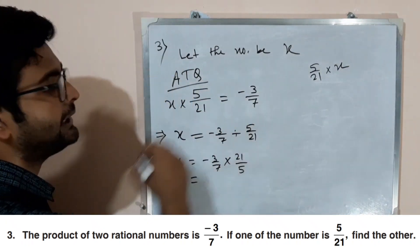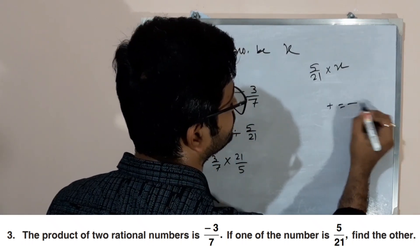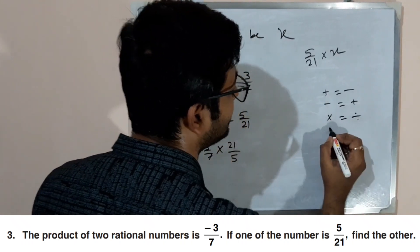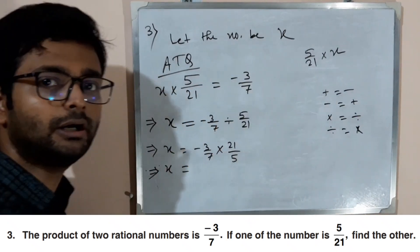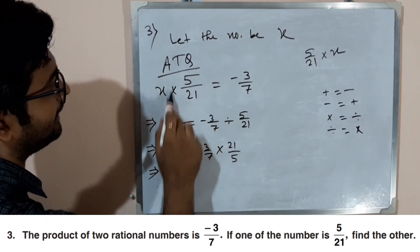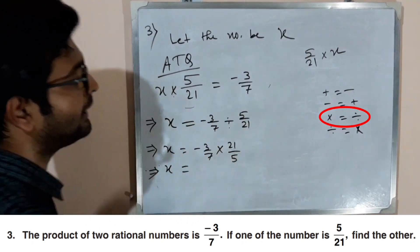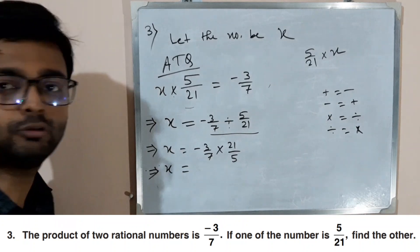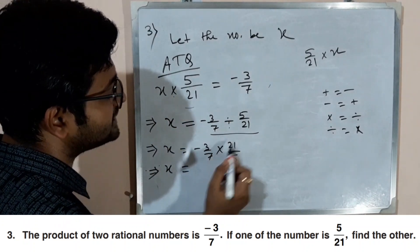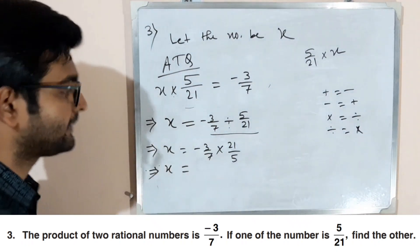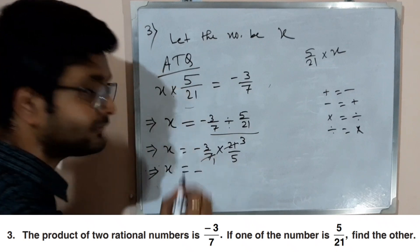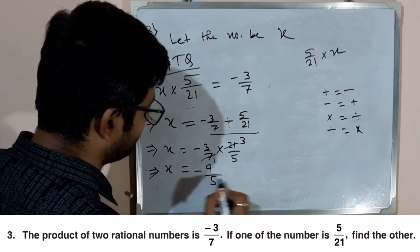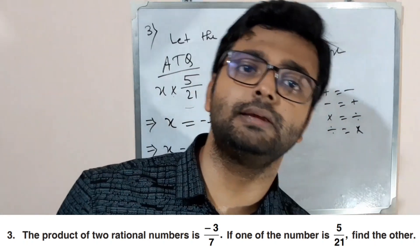To solve for x: divide both sides, so x equals minus 3 by 7 divided by 5 by 21. Change divide to multiply and write the reciprocal of 5 by 21 as 21 by 5. Cancel: 7 threes are 21, so 3 and 7 cancel with 21. Minus times plus gives minus. So 3 times 3 is 9, and the other number is minus 9 by 5.